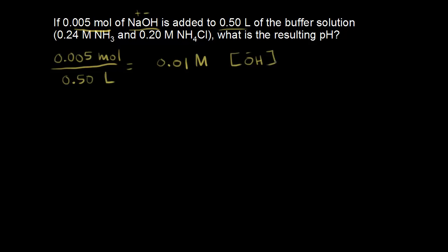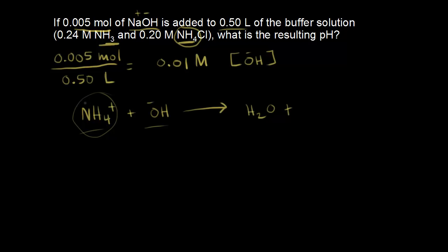We're adding a base, so think about what it will react with in our buffer solution. The buffer has NH3 and NH4 plus. The base is going to react with the acid, so hydroxide is going to react with NH4 plus. Writing out the reaction: NH4 plus reacts with hydroxide, and this goes to completion. NH4 plus donates a proton to OH minus, producing H2O and NH3.